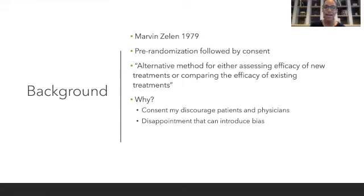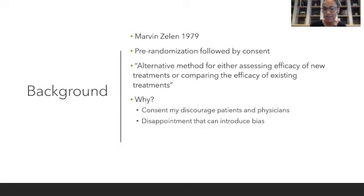This design's strategy consisted in randomization of patients followed by consent. He came up with this idea because he thought that patients are easily discouraged once they learn in the consent form about two different treatments available. Also, once patients have been randomized and they realize which group they've been assigned to, they may be disappointed and could introduce bias, like performance bias, because they didn't want to be part of that group.